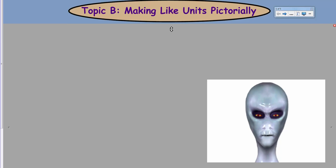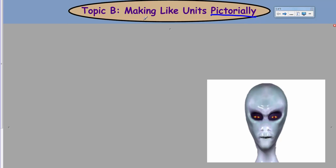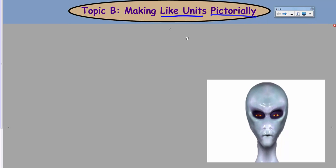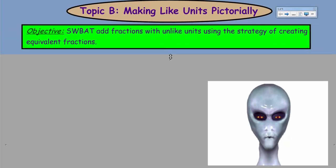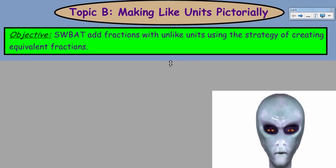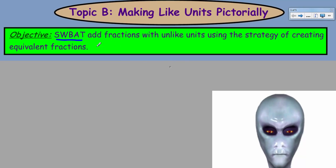It really is me behind that avatar. So we're going to be making like units pictorially — 'pictorially' just means making a picture of something. When we look at this, 'making like units' means the denominators are going to be the same, and we're going to represent that pictorially. Let's get started because we have a lot of work to do.